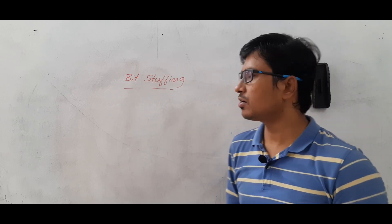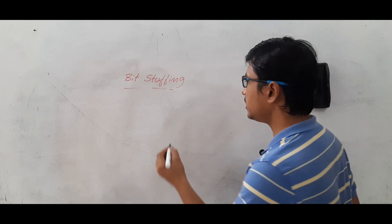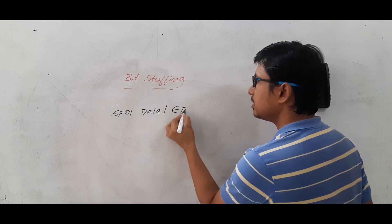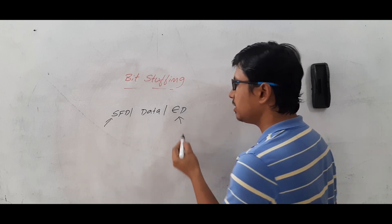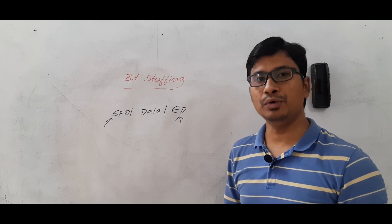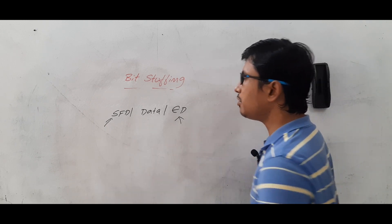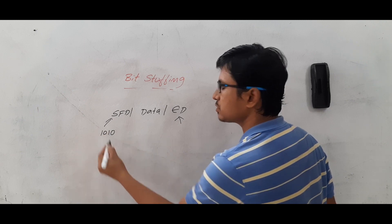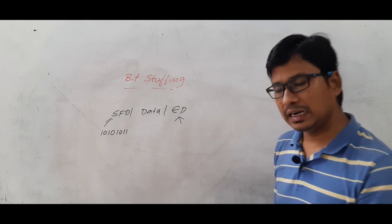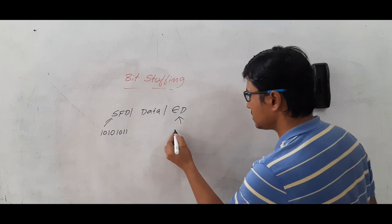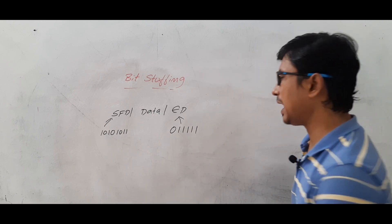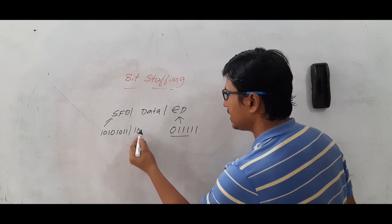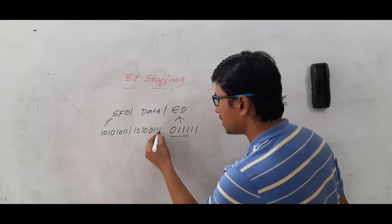The bit stuffing concept exists because we have a start frame delimiter and an end delimiter, which are useful for identifying the boundaries of the frame. The start frame delimiter has the pattern 1010101011. Let's take the end delimiter pattern as 0 followed by five 1s. Now consider if the data to be sent is: 1010 followed by 0 and five 1s.